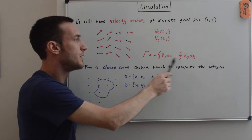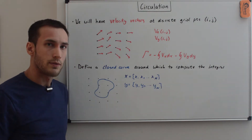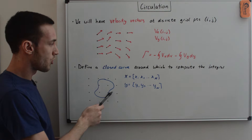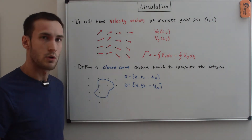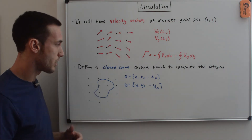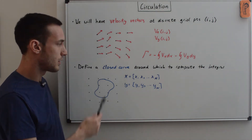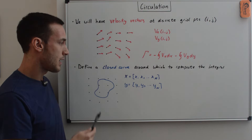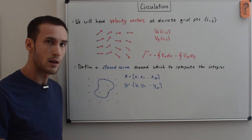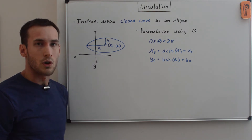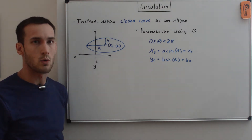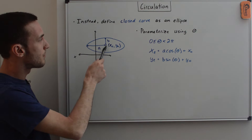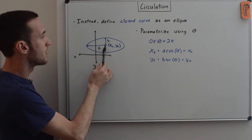We still need to define the dx and dy components, i.e., the closed curve. We take the same grid points without velocity vectors and draw an arbitrary closed curve in blue to compute the integral around. This curve can be specified as a sequence of x and y coordinate pairs. Instead of an arbitrary shape, let's define the closed curve as an ellipse on the xy coordinate plane, with center at x-naught, y-naught, horizontal half-axis a, and vertical half-axis b.